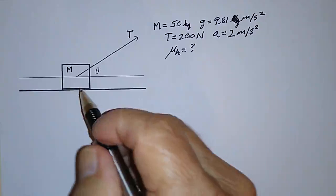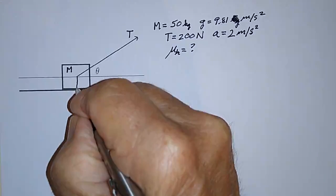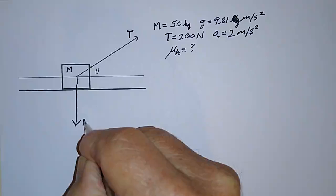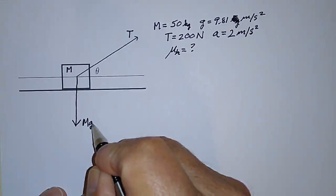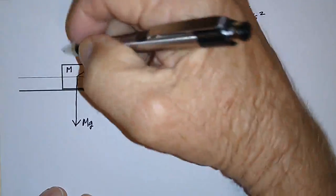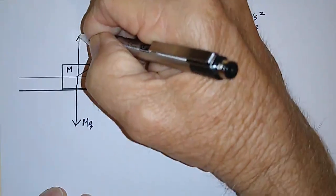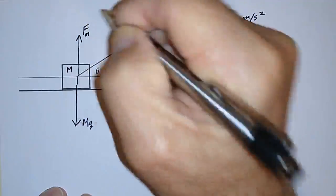So what we have to do is look at the forces acting on the mass M. This is the force due to gravity which I'm going to call Mg, and that's M times G. This is the normal force, I'm going to represent it as F sub n.